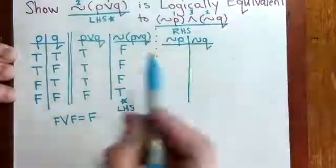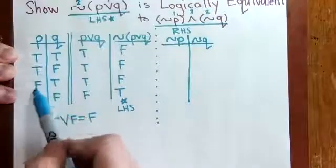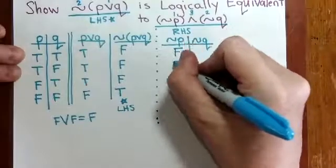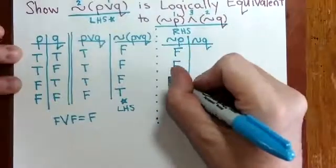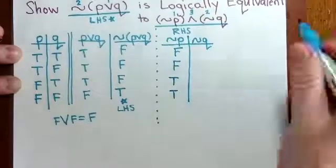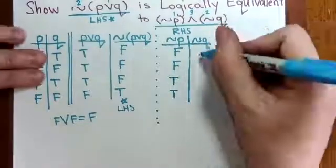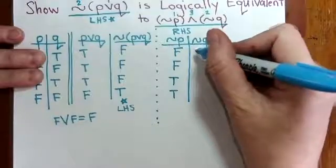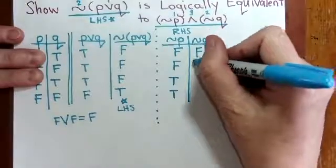Looking back at P, we have T T F F, so to negate that we flip the Ts to Fs and the Fs to Ts. And NOT Q, we turn the Q column from T F T F to F T F T.